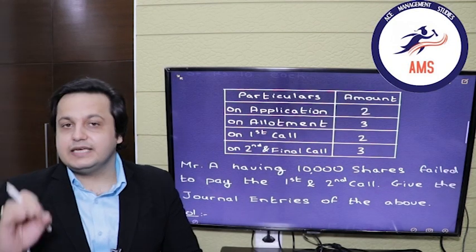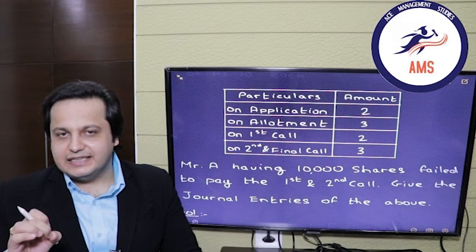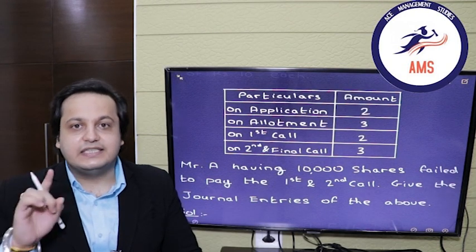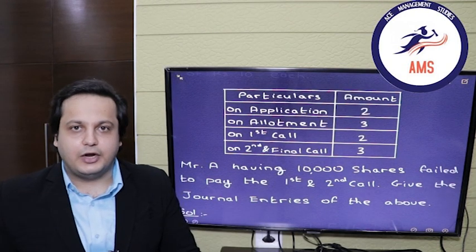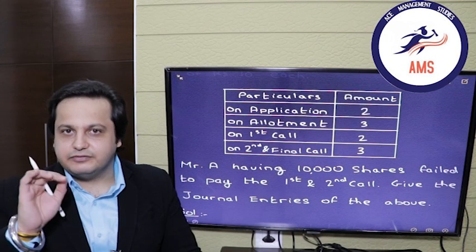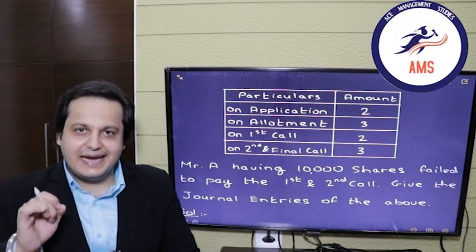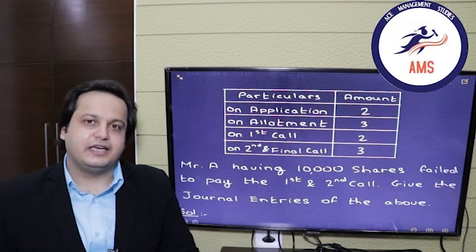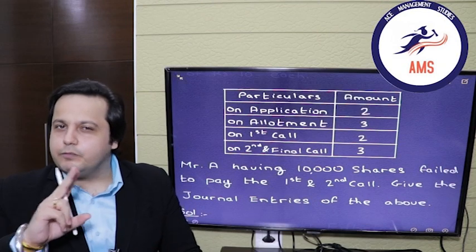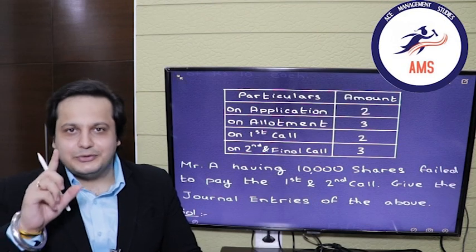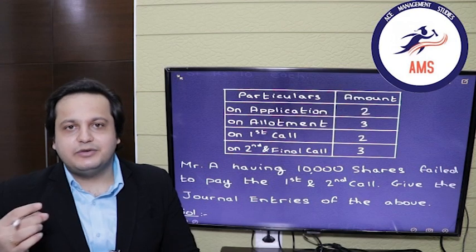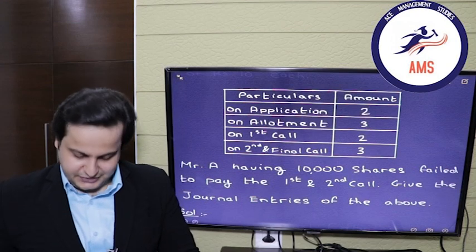Mr. A, having 10,000 shares, failed to pay the first call and the second and final call. In this method, we will not use the call-in arrears account. So let's move forward with the journal entries.